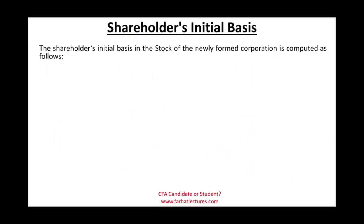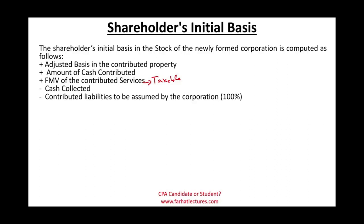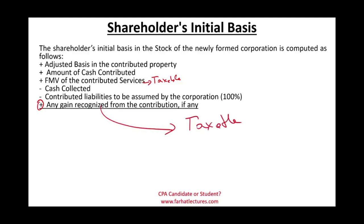The shareholder's initial stock basis starts with the adjusted basis of the property contributed — not the fair market value — plus any cash contributed, plus the fair market value of contributed services (since that amount is already taxable). Then subtract any cash received back and any contributed liabilities assumed by the corporation. Finally, add back any gain recognized from the contribution, since once you pay taxes on something it becomes part of your basis.